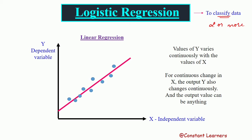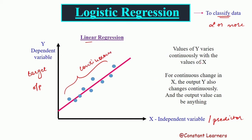We haven't discussed linear regression yet but we will in the future. For now we need some background of linear regression, so we are discussing it here in short. In linear regression we have an independent variable — the predictor — that helps us predict our output, and the dependent variable is the target or output we are expecting. The output is continuous, meaning whenever x varies, y also varies continuously with it. The value of the dependent variable changes continuously with the values of the independent variable, and this output could be any value ranging from minus infinity to plus infinity.